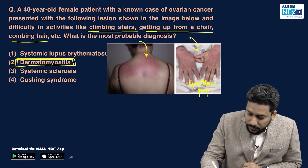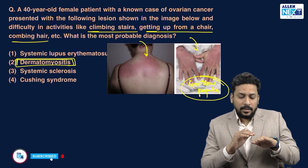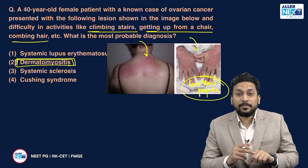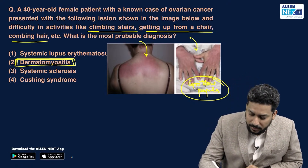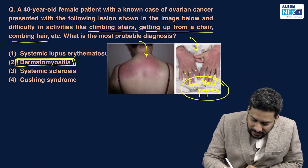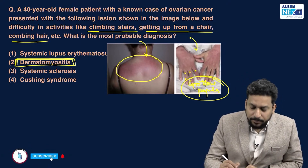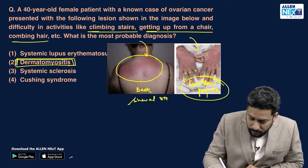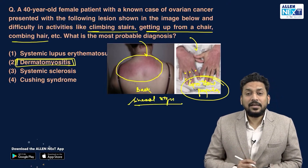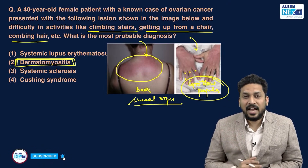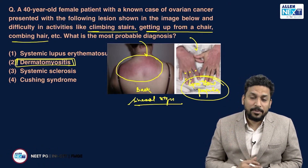Gottron's papules are generally seen over the interphalangeal joints or metacarpophalangeal joints. Similarly, there is the shawl sign, which is an erythematous violaceous presentation over the back.